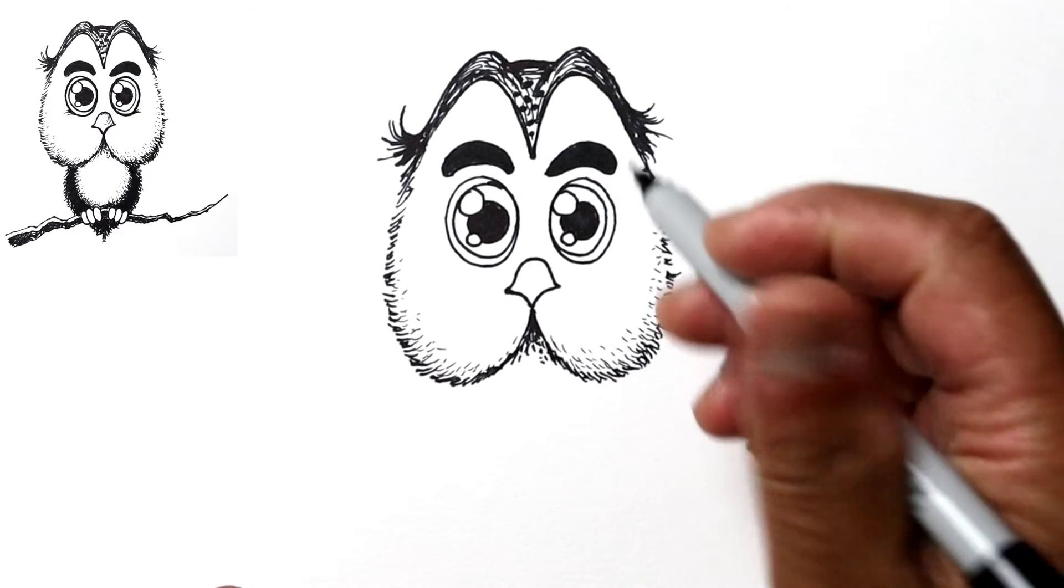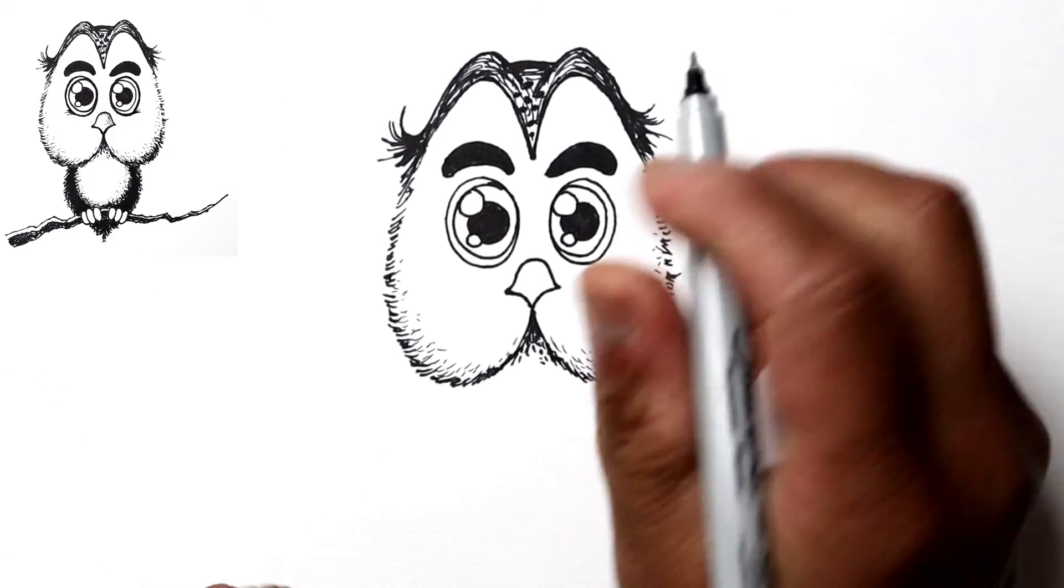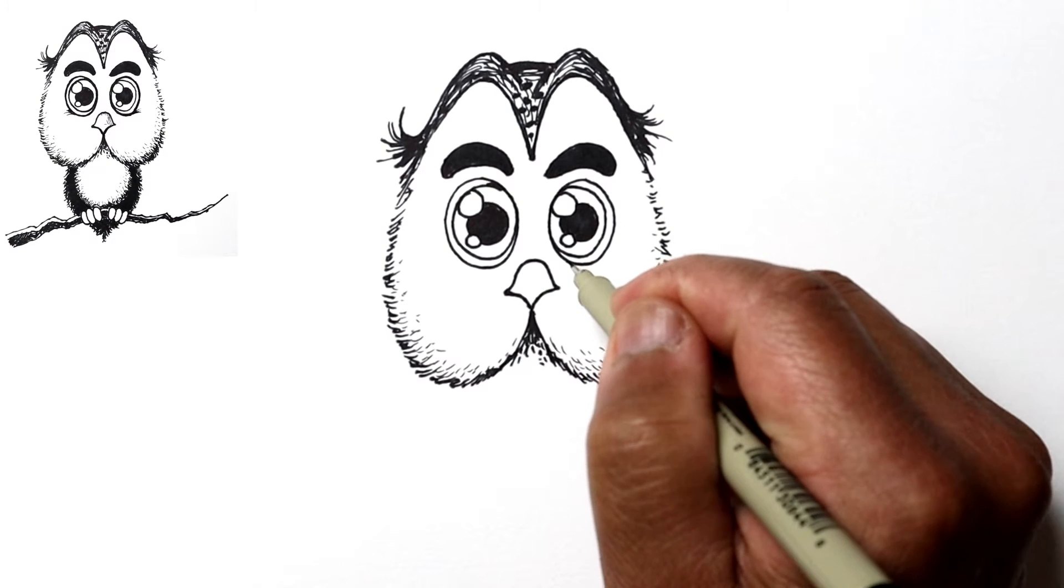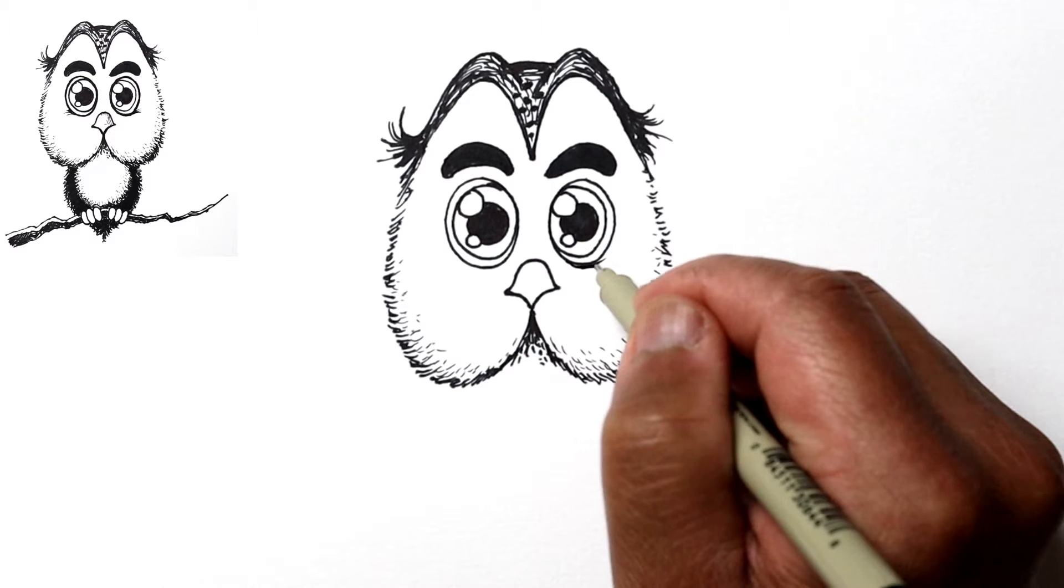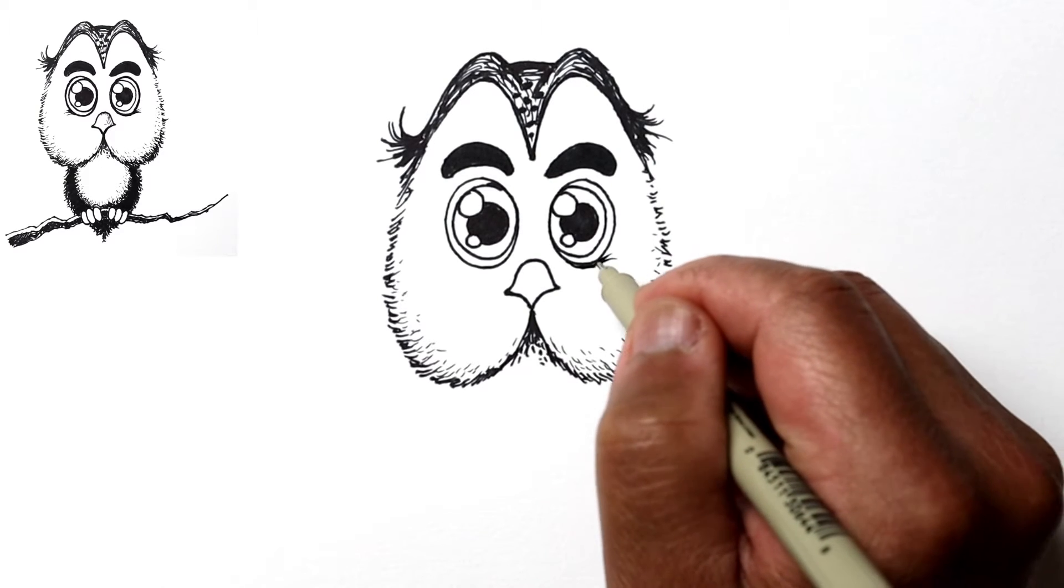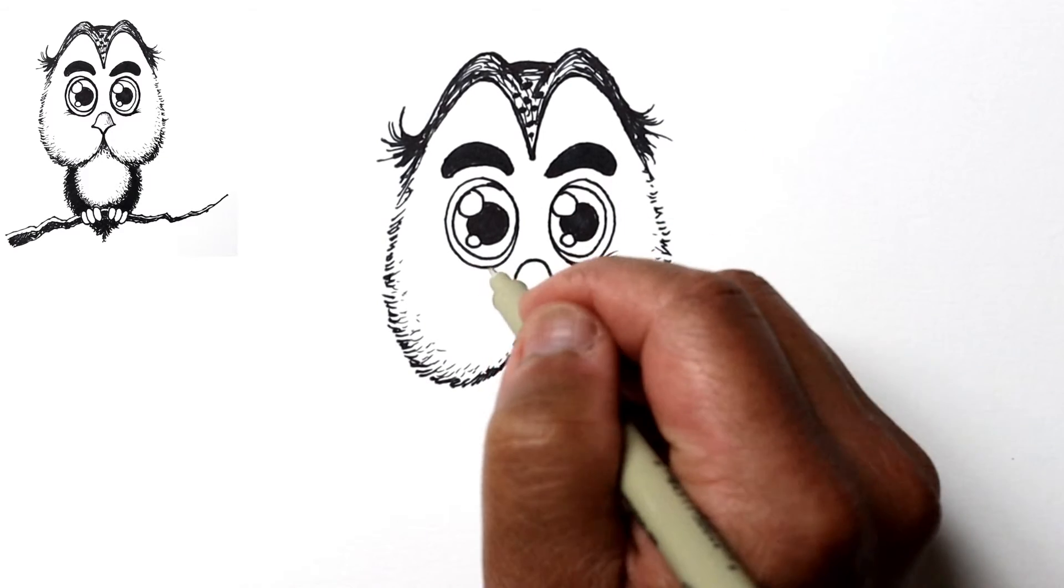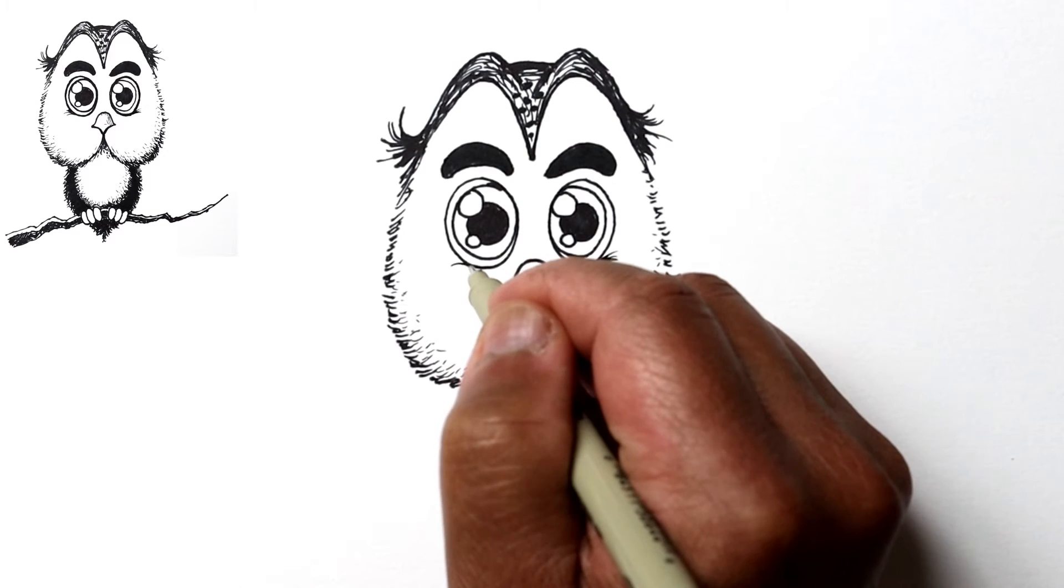Okay, next I'm going to just add a couple wrinkle lines underneath the eye. And I'm just going to go from below, add some curved lines here on the eye, going outward.